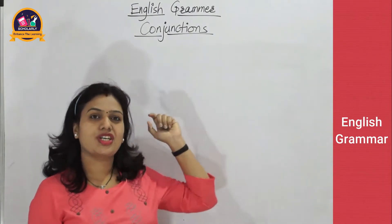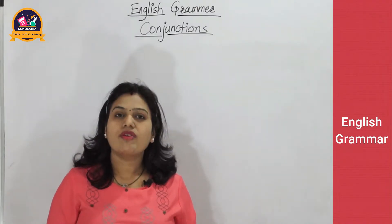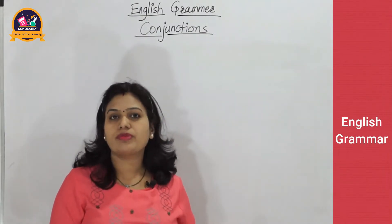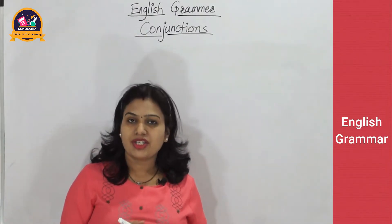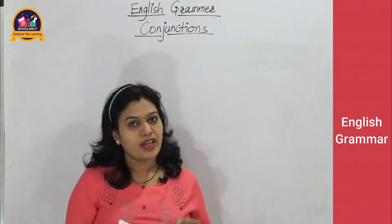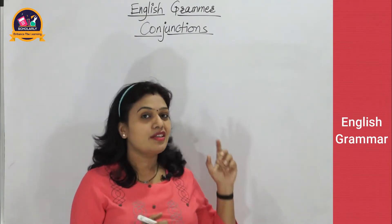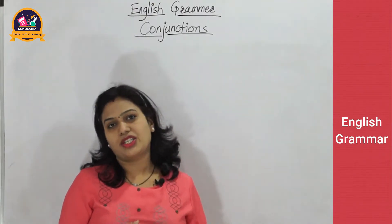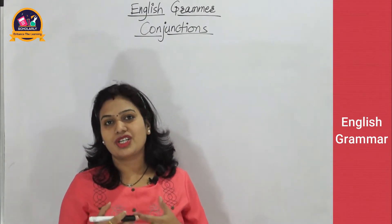Friends, conjunctions. What are conjunctions? Conjunctions are one of the parts of speech. We have learned the eight parts of speech. Conjunction is the seventh part of speech, and conjunctions are also important while constructing sentences. Whenever we are going to construct a longer sentence, then we need these conjunctions. So let's learn what conjunctions are, how we can use them, and what the types of conjunctions are.